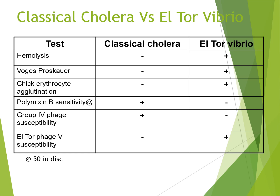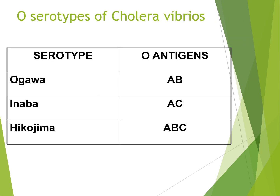A table shows the differences between classical and El Tor Vibrio cholera. Hemolysis is negative for classical but positive for El Tor. Voges-Proskauer test and lymphocyte agglutination are negative for classical and positive for El Tor. Polymyxin B sensitivity and group 4 phage sensitivity are positive for classical, while El Tor phage 5 sensitivity is negative. There are also O serotypes: Ogawa (antigens A and B), Inaba (antigens A and C), and Hikojima (antigens A, B, and C).